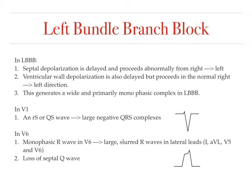Moving on to left bundle branch block: the septal depolarization is delayed and proceeds abnormally from right to left — opposite of normal. So in V1, you see a small R wave instead of a small Q wave. Next, ventricular wall depolarization proceeds mostly in a right to left direction. Because the left ventricle is much larger, prolonged depolarization in that direction produces a large monophasic S wave in V1, or a very large monophasic R wave in V6.